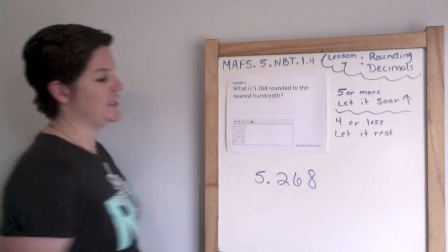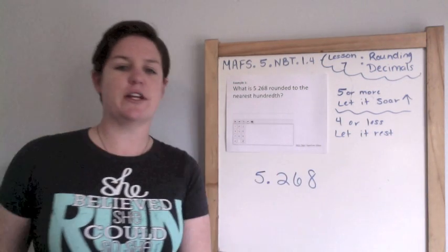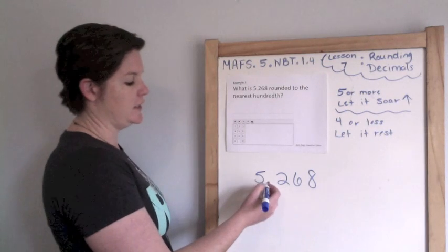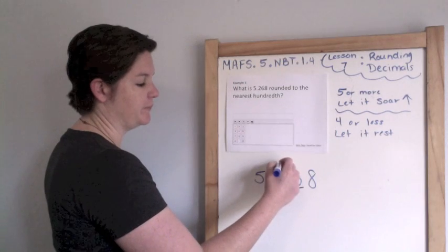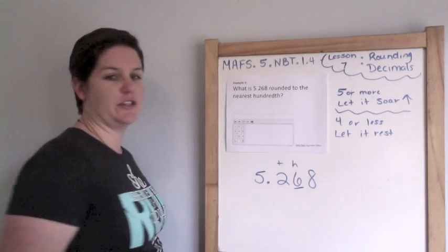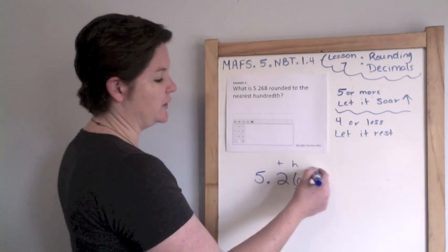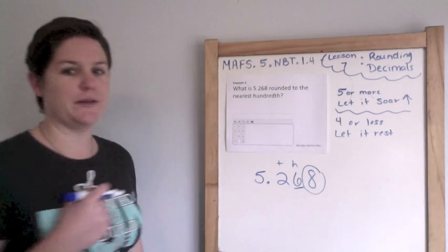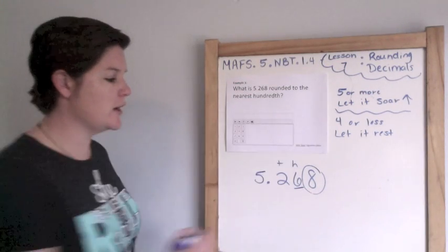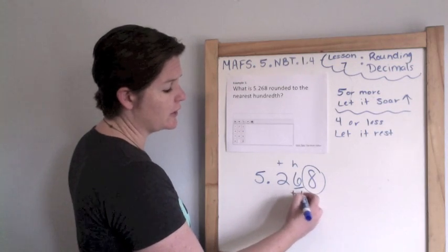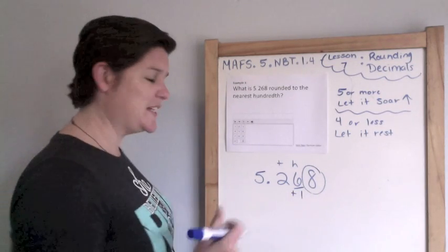What is five and two hundred sixty-eight thousandths, rounded to the nearest hundredth? So first, let's find and underline the hundredths place. Decimal to the right, tenths, hundredths. There it is. This is the tenths, this is the hundredths place. So we look next door. Spotlight to the right. Eight goes in the five or more. Let it soar, and add one to the rounding place.